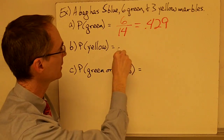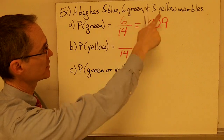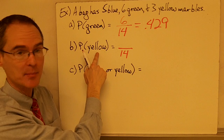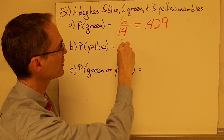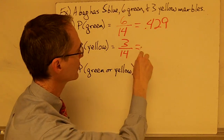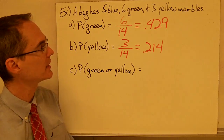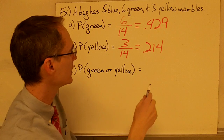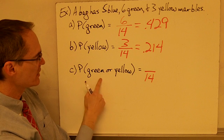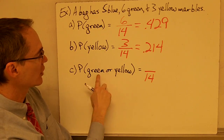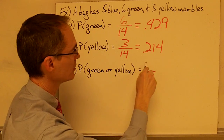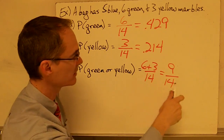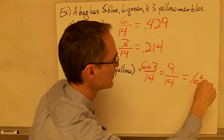The probability of drawing a yellow marble: the total outcomes are still 14. There are three yellow marbles, so there are three ways this event can happen. Three divided by 14 is .214. For the probability of drawing a green or yellow marble, there are six green marbles and three yellow marbles, giving nine ways the event can happen. Nine divided by 14 is .643.